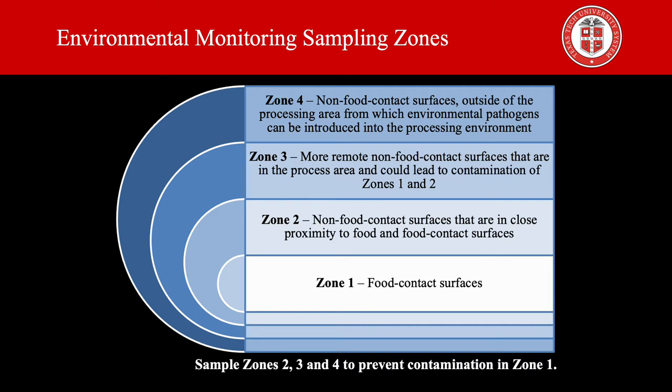Zone 2 involves non-food contact surfaces that are in close proximity to food and food contact surfaces. For example, equipment framework, drip shields and housing, control panels and buttons, pipes over zone 1, computer screens, and maintenance tools.